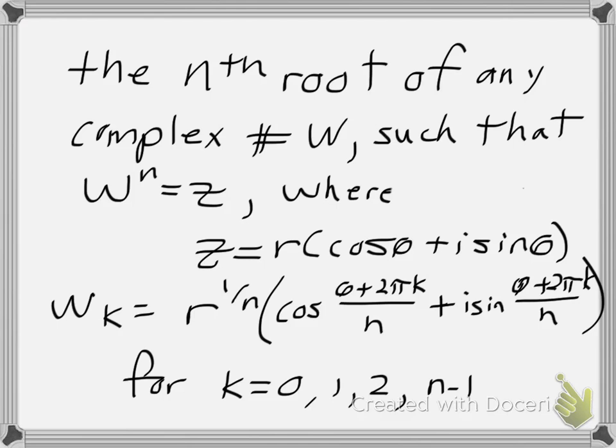Since in this case I have three roots, n becomes 3, which means I'll use 0, 1, and 2 for values of k. If I was asking for the fourth root, we would use 0, 1, 2, and 3. If I was asking for the fifth root, we'd use 0, 1, 2, 3, and 4. For the sixth root, 0, 1, 2, 3, 4, and 5, and so on.